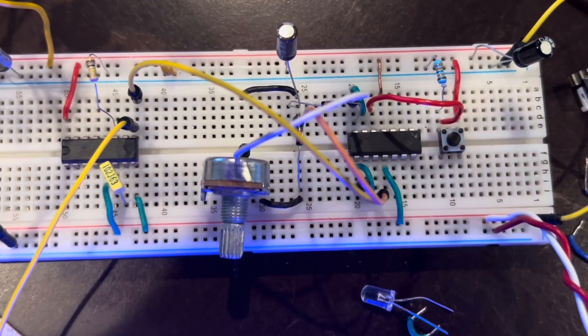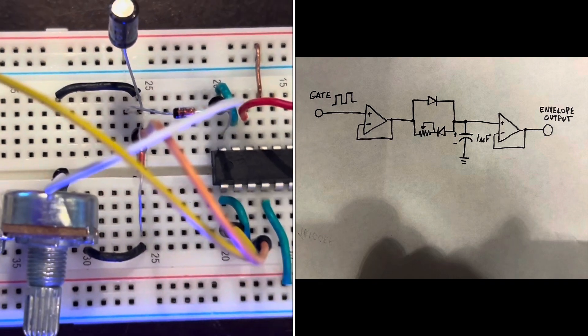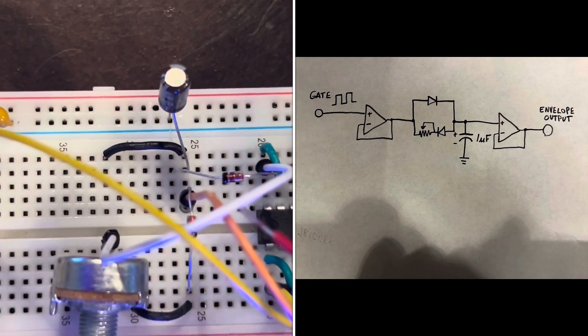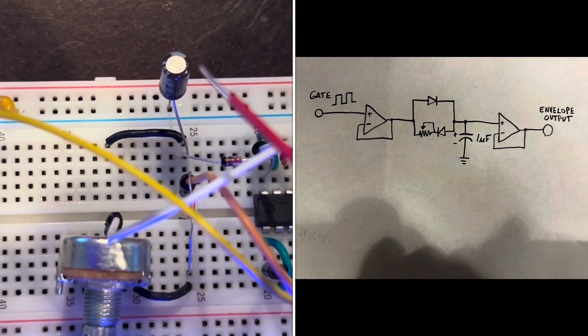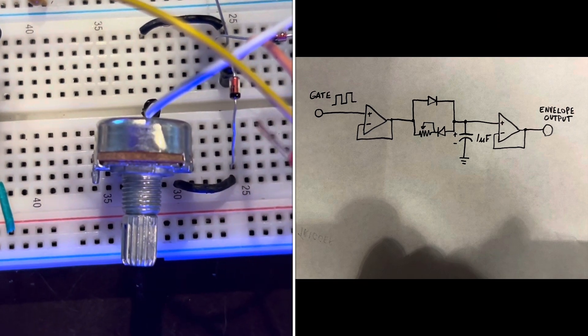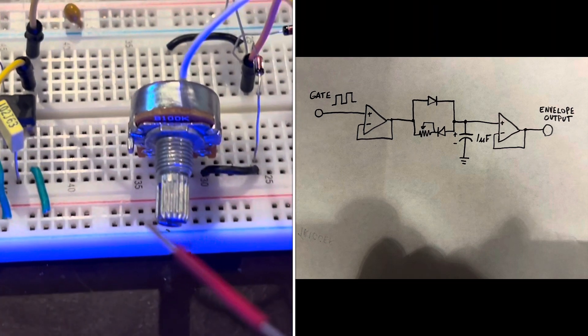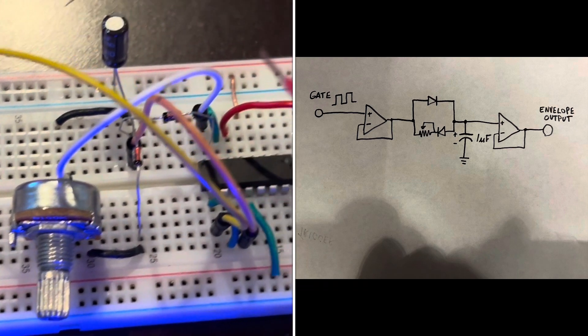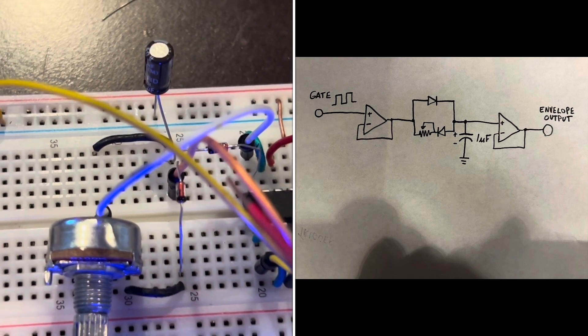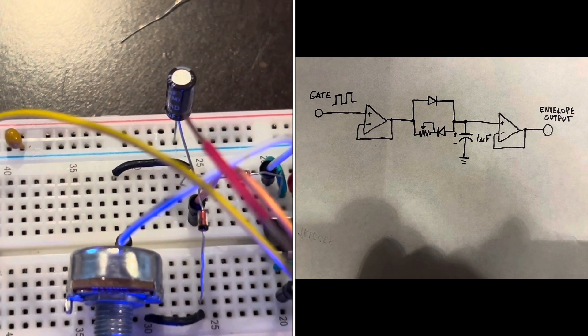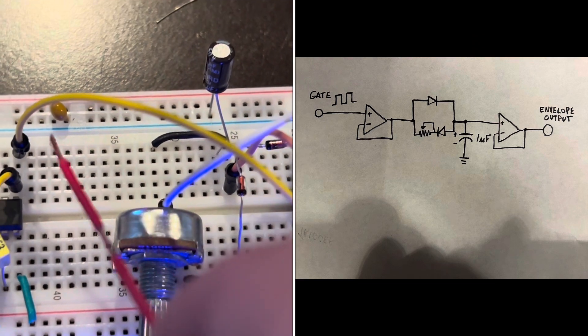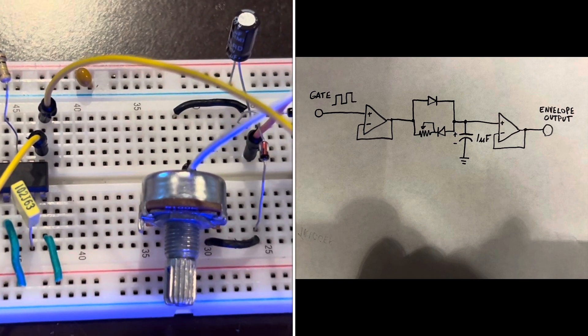And the input of that goes into this TL074 op amp. That input goes in, and it's buffered here. Then it goes through this diode, and then to the positive end of this electrolytic capacitor. The output of that goes through this diode and through this 100k potentiometer, and then back to the output of the op amp, the buffer. So the signal from here, where the capacitor is, goes to another buffer. And the output of that goes through this yellow wire into the voltage control of this voltage controlled oscillator.